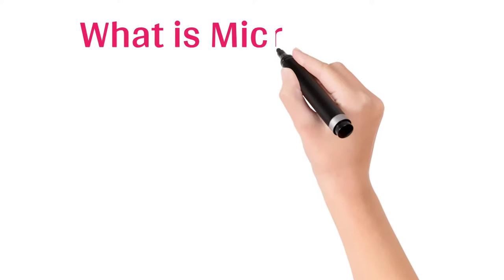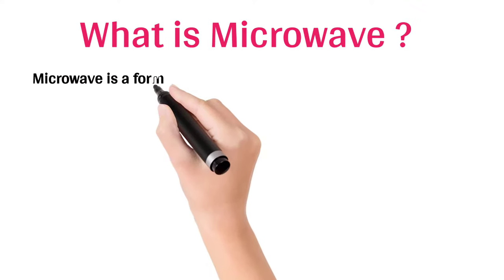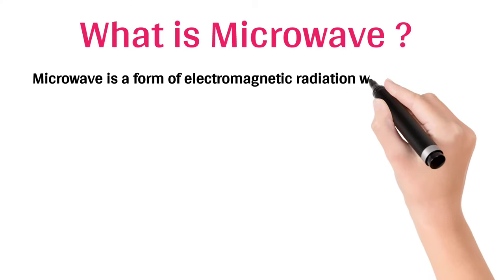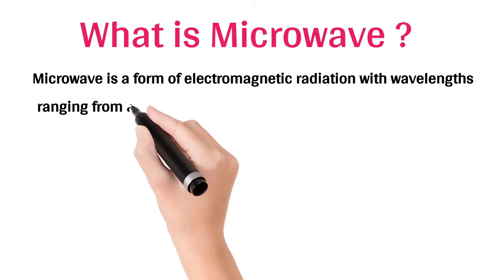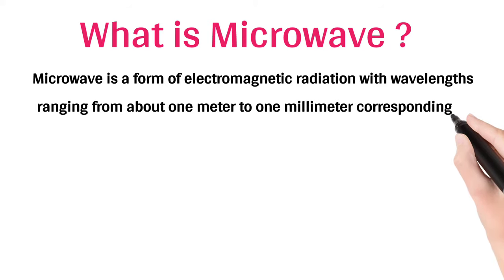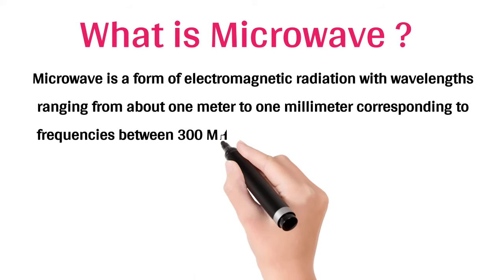What is microwave? Microwave is a form of electromagnetic radiation with wavelengths ranging from about 1 meter to 1 millimeter corresponding to frequencies between 300 megahertz and 300 gigahertz respectively.